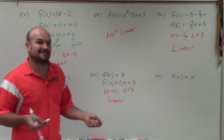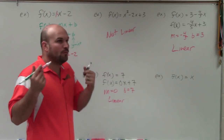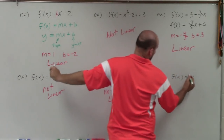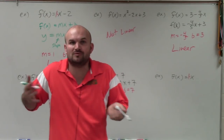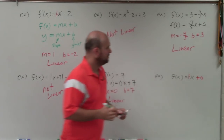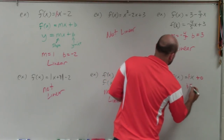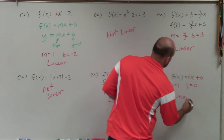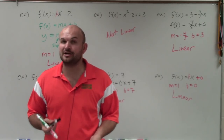The last one is f of x equals x. There's no number, but think of 1 and 0. The coefficient can be 1. What about the y-intercept? Well, x plus what equals x? 0. So m equals 1 and b equals 0 — that is also linear. So there you go, ladies and gentlemen. That is how you determine if a function is linear or not.